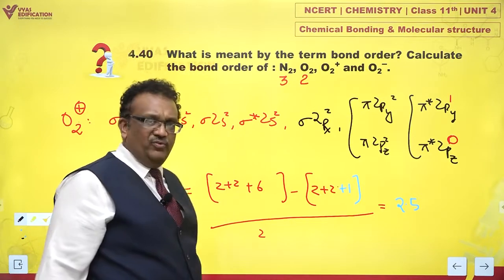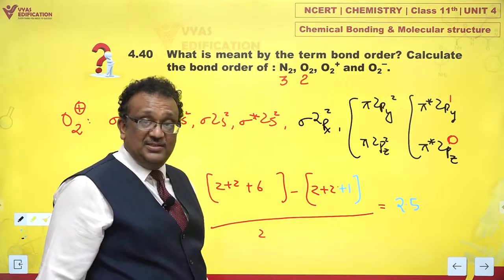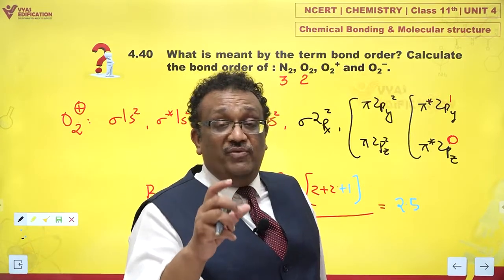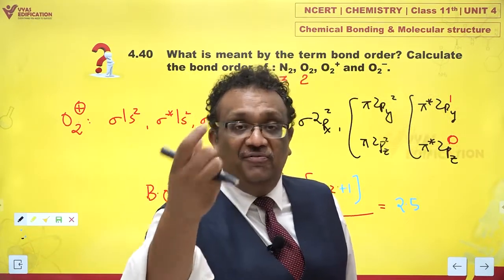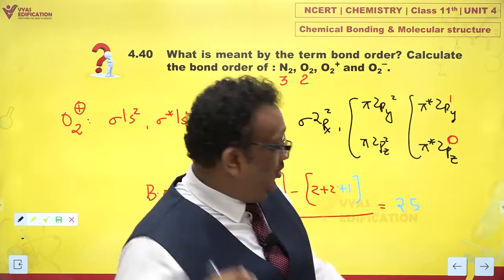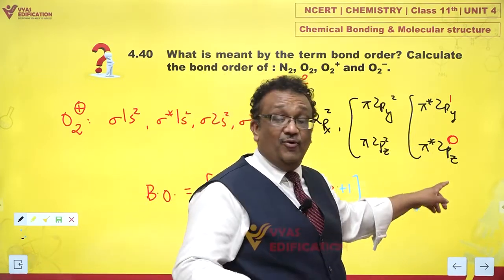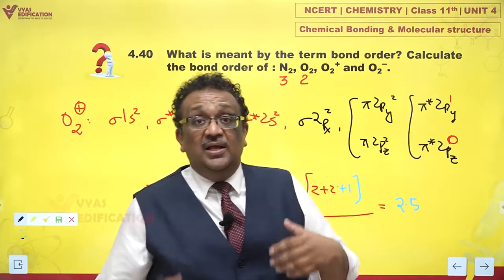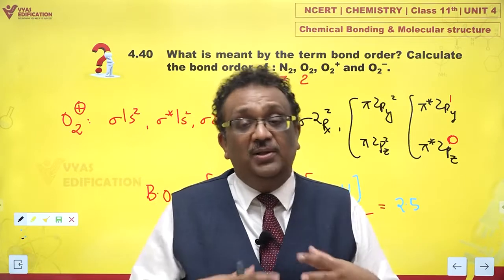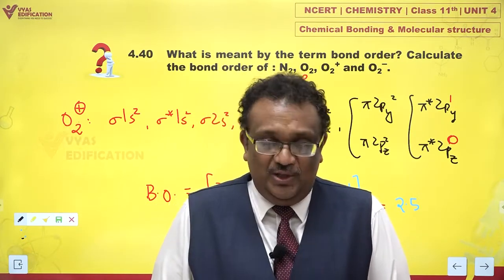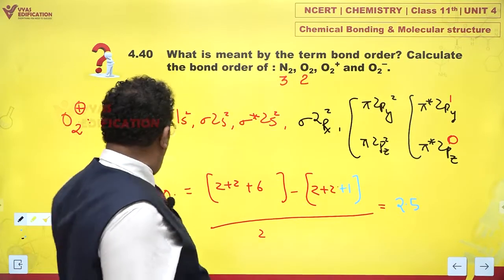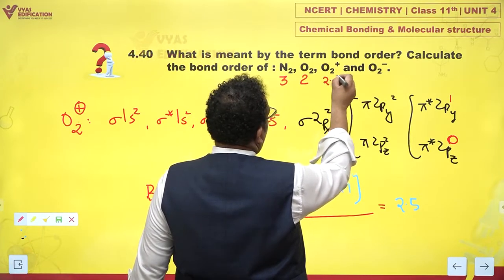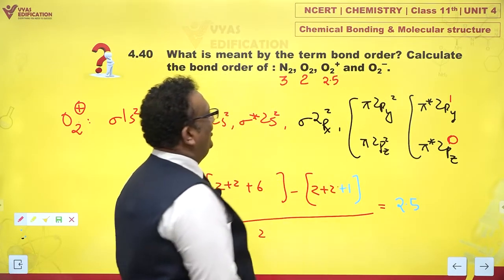That means when O2 will change to O2 plus, bond order will change from 2 to 2.5. Bond order will increase because electrons are being removed from an antibonding orbital. If electrons enter antibonding orbitals, antibonding orbitals actually destroy the pre-existing bonds. So when an electron is lost, it's pretty good and we get a stronger bond, which is highly welcome. So O2 plus has a bond order of 2.5.